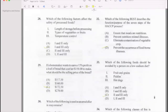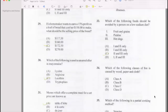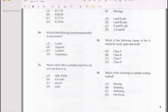Number 34: Which of the following classes of fire is caused by wood, paper, and cloth? Number 35: Which of the following is a partial cooking method? Parboiling.